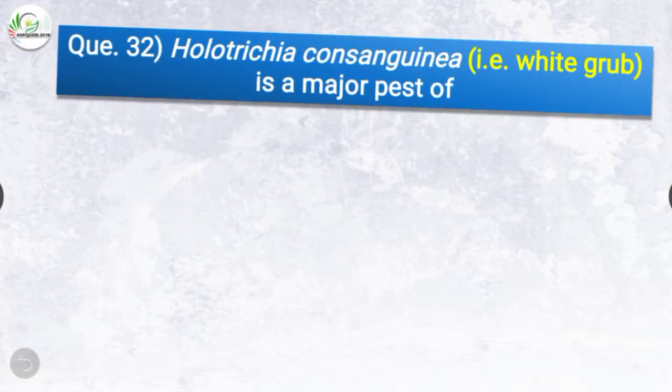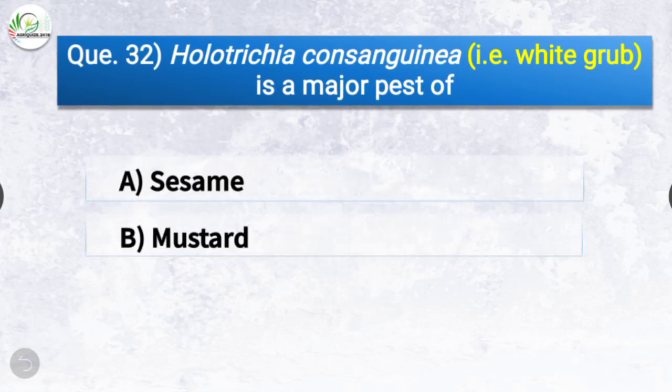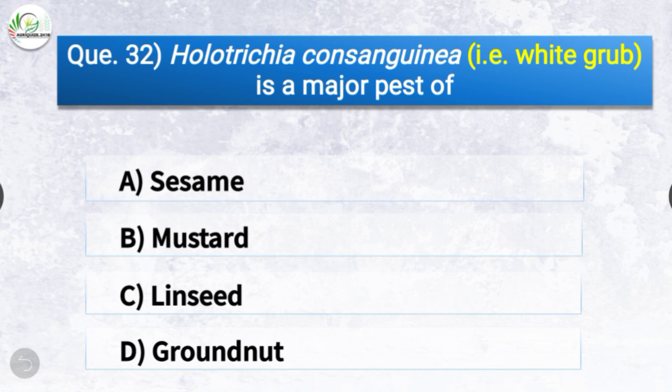Question number thirty-two: Holotrichia consanguinea, that is white grub, is a major pest of? The options are sesame, mustard, linseed, or groundnut. The correct answer is option D, groundnut — Holotrichia consanguinea (white grub) is a major pest of groundnut.